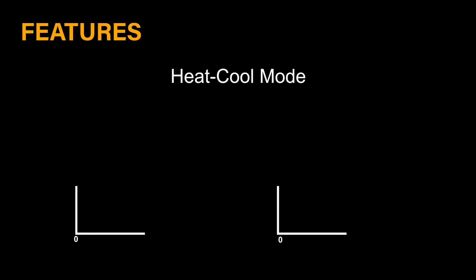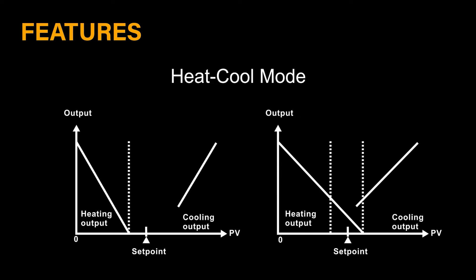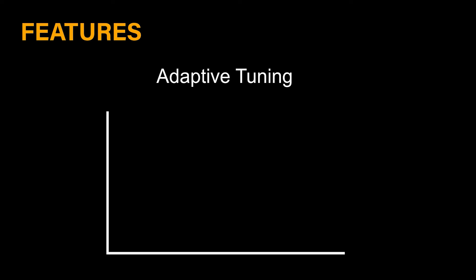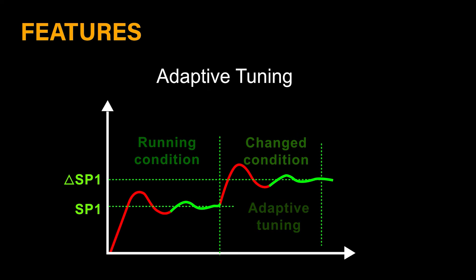Features: Heat/cool mode provides two outputs — one for heating and one for cooling — with the PID controller. Adaptive tuning means the user does not have to retune the controller after any change in set point or conditions; the unit will make the adjustment by itself.